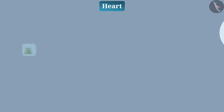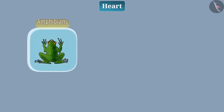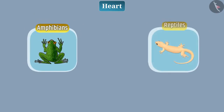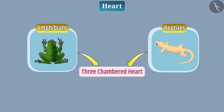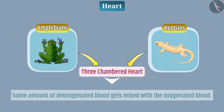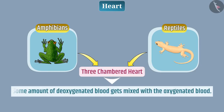Animals such as amphibians and reptiles have a three-chambered heart. For this reason, some amount of deoxygenated blood gets mixed with the oxygenated blood.